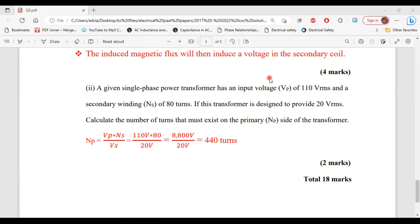For part two, it says a given single phase power transformer has an input voltage VP of 110 volt RMS and the secondary winding NS of 80 turns. If the transformer is designed to provide 20 volts RMS, calculate the number of turns that must exist on the primary NP side of the transformer. All right. So number of primary turns is equal to the primary voltage multiplied by the secondary turns divided by secondary voltage. So that is 110 volts multiplied by 80 turns divided by 20 volts. So 110 times 80 will give us 8,800 divided by 20 volts. That will give us 440 turns. All right. So that's it for this question.